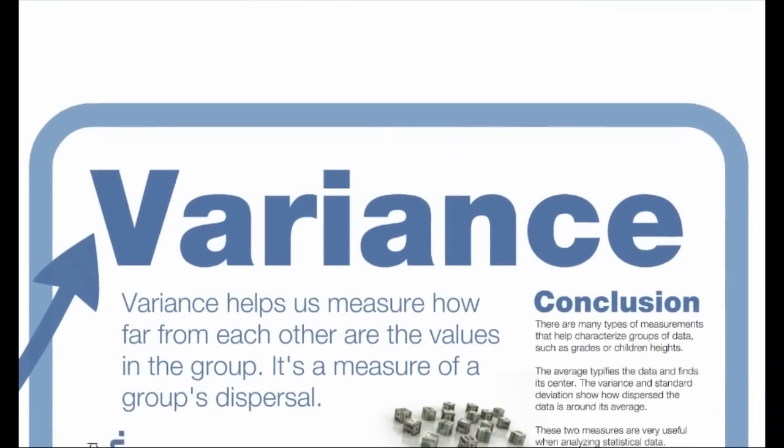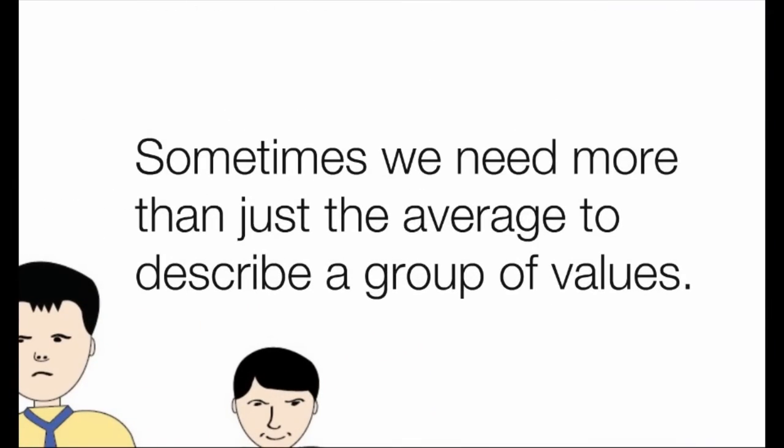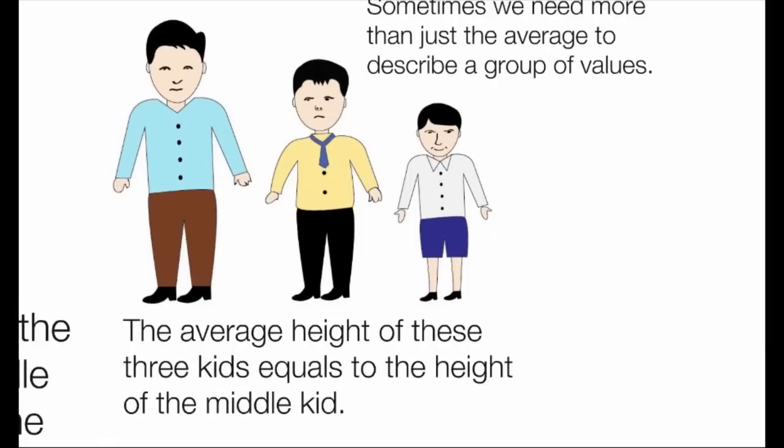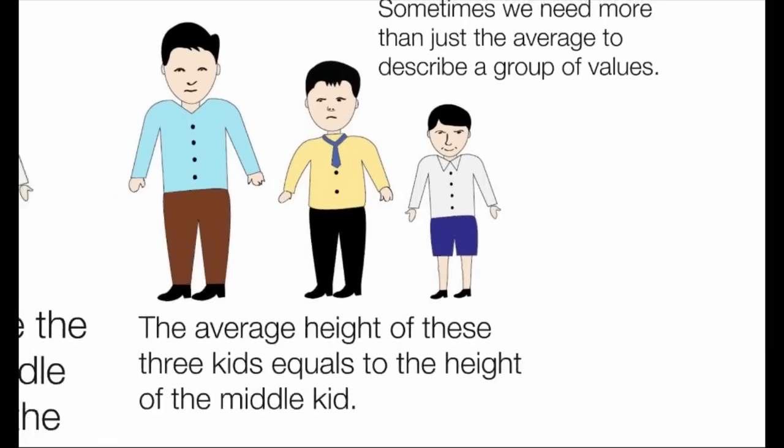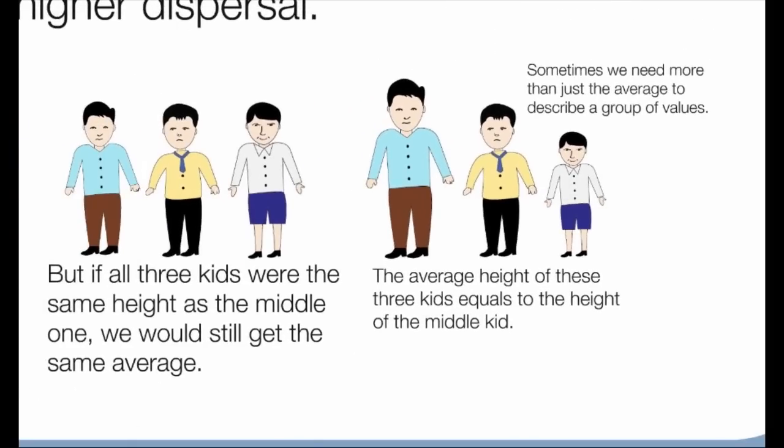Variance. Sometimes we need more than just the average to describe a group of values. The average height of these three kids equals the height of the middle kid. But if all three kids were the same height as the middle one, we would still get the same average.